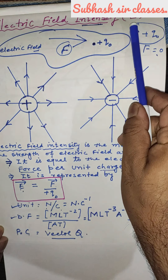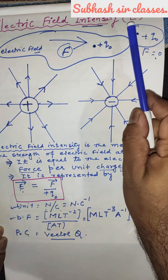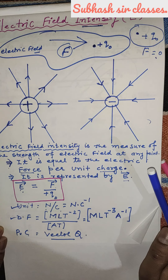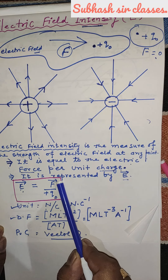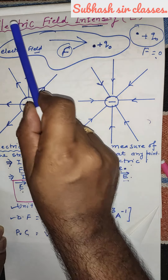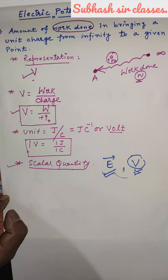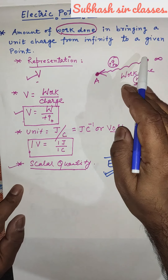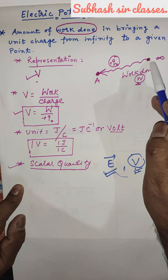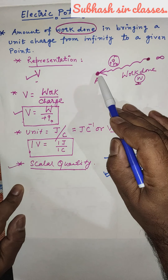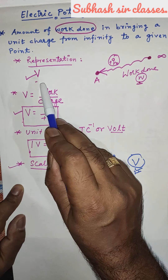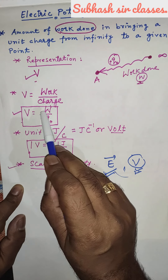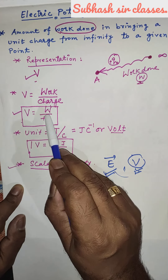Electric field intensity is denoted by E. Basically, electric field intensity is the electric force applied per unit charge: E is equal to F divided by Q-naught. Next, electric potential is the work done in bringing a unit charge from infinity to a point A, represented by V. V is equal to W divided by Q-naught. This is the essential formula for electric potential.